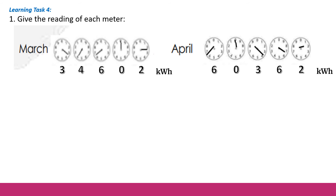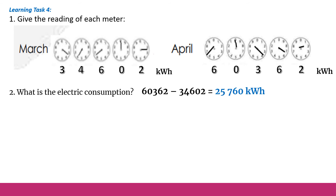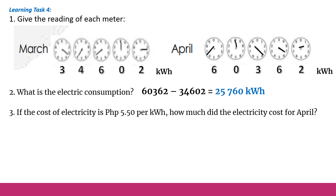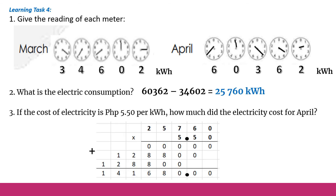Now, what is the electric consumption? We subtract the March reading from the April reading: 60362 minus 34602, and the difference is 25760 kilowatt hours. Next, if the cost of electricity is 5 pesos and 50 centavos per kilowatt hour, we multiply 25760 by 5.50 to get the cost for April.